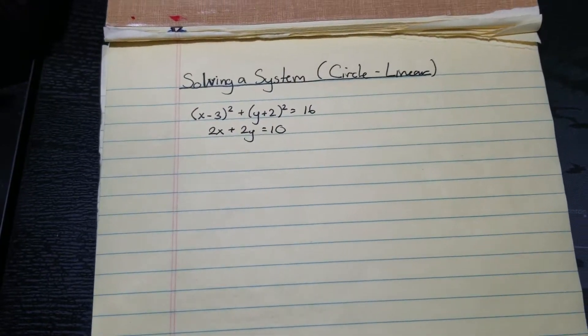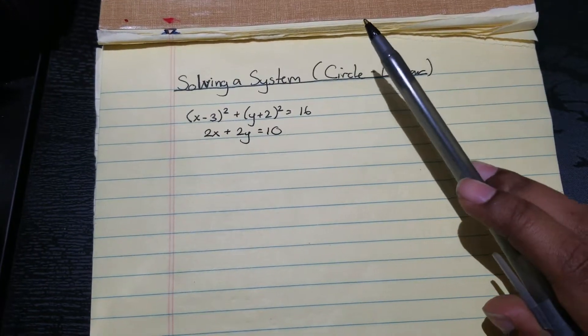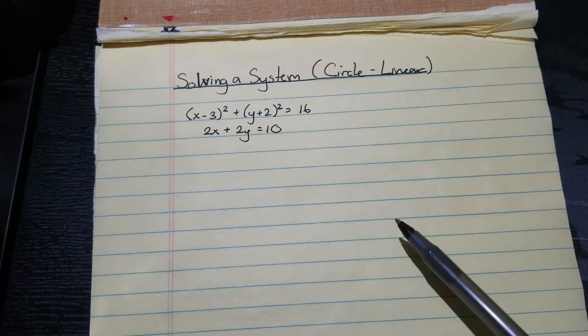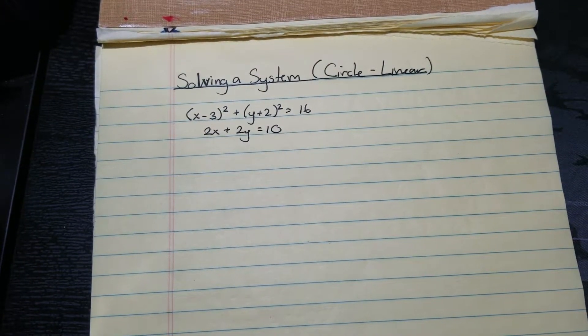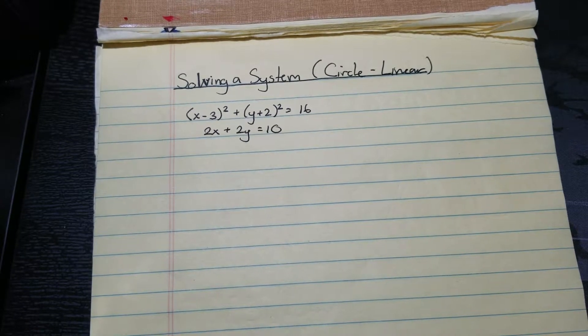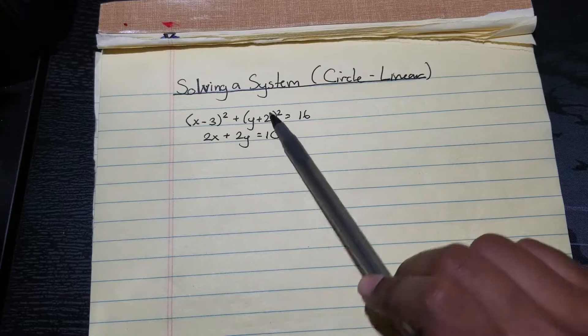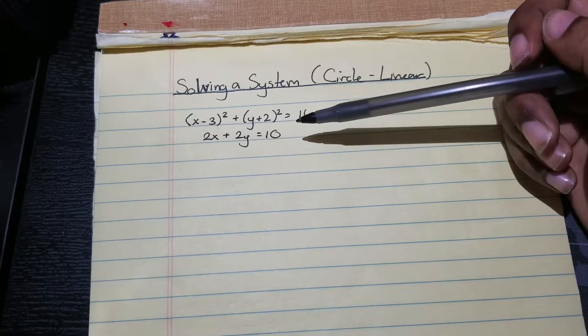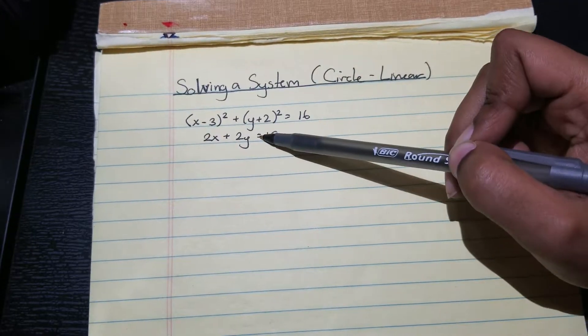Hey everyone, so today we're going to cover solving a system, this time with a circle and a linear equation. We're not going to start off the same way we did with three linear equations, but we are going to be using the idea of substitution later. Okay, so here we have two of these and we're trying to solve this algebraically too. So what's going to happen is that we're going to first focus on this linear equation.